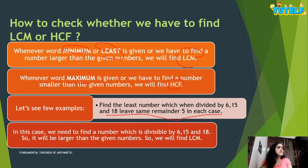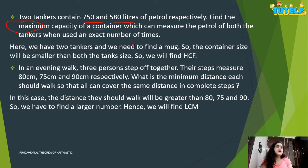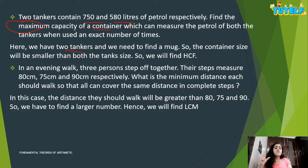Example: Two tankers contain 750 and 580 liters of petrol respectively. Find the maximum capacity of a container which can measure the petrol of both tankers when used an exact number of times. The keyword 'maximum' and the fact that the container must be smaller than both tankers tells us to find HCF.